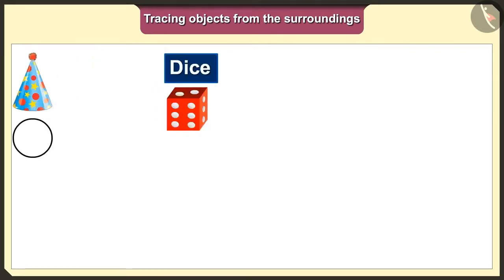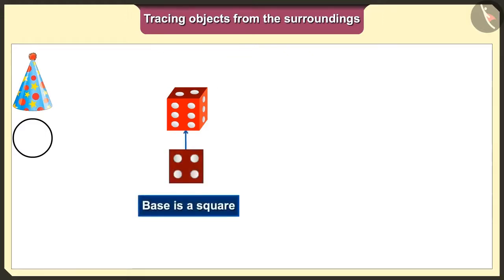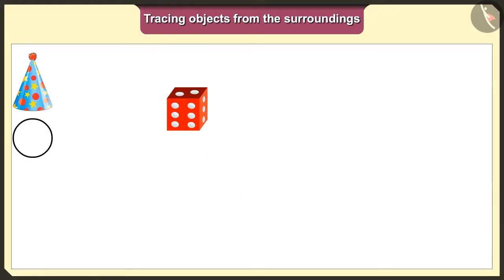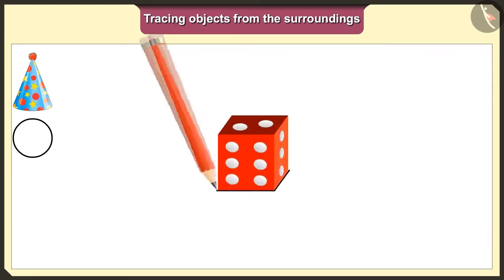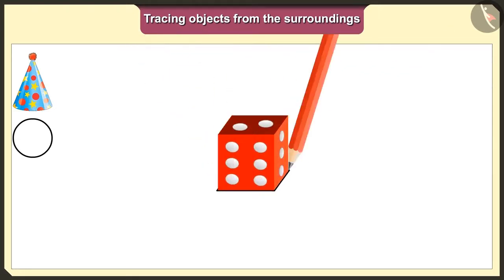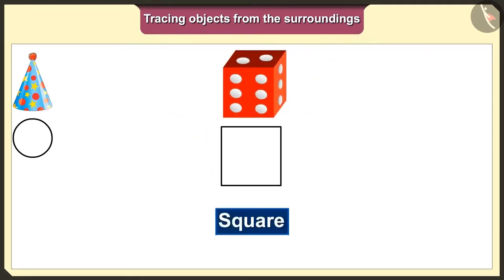Now, we will trace the dice. This dice's base is a square. So, we will get a square shape when we put it on paper and trace it.